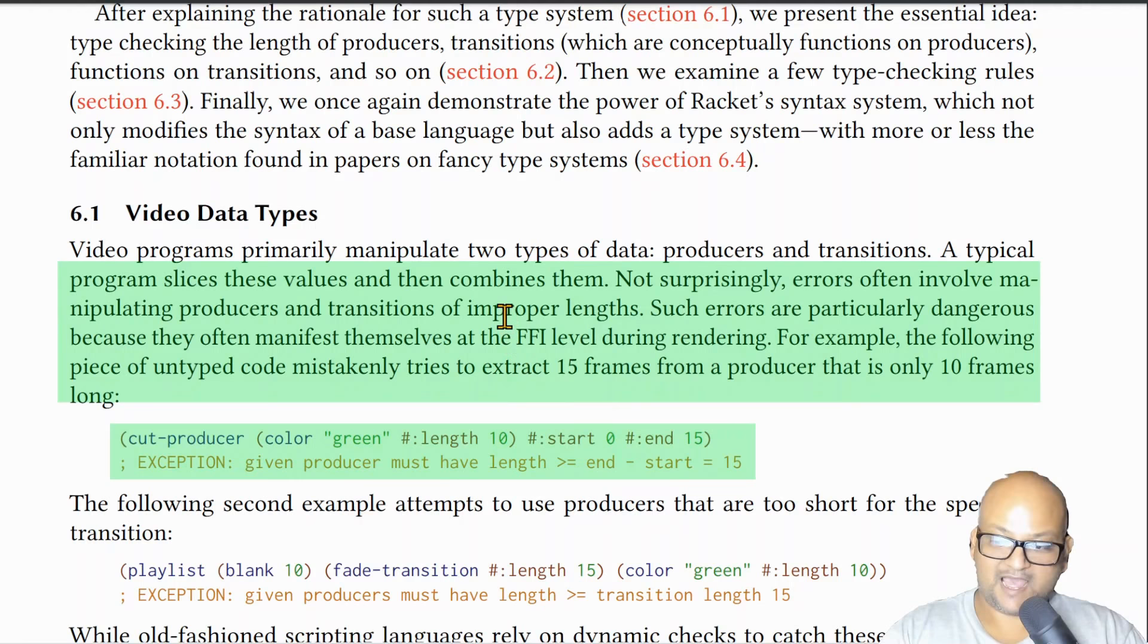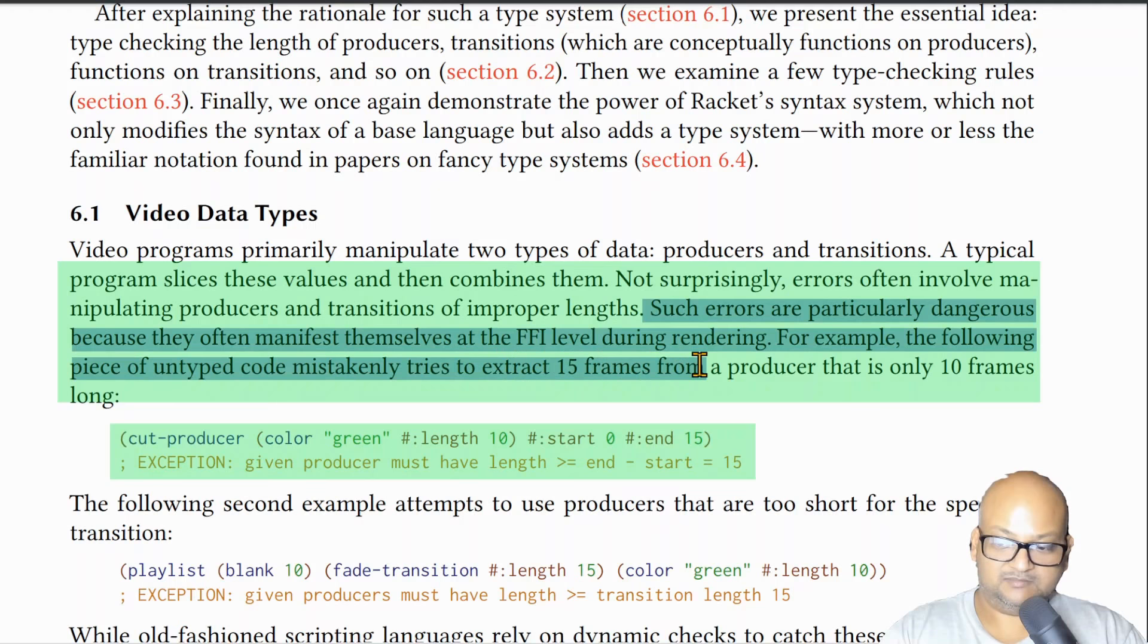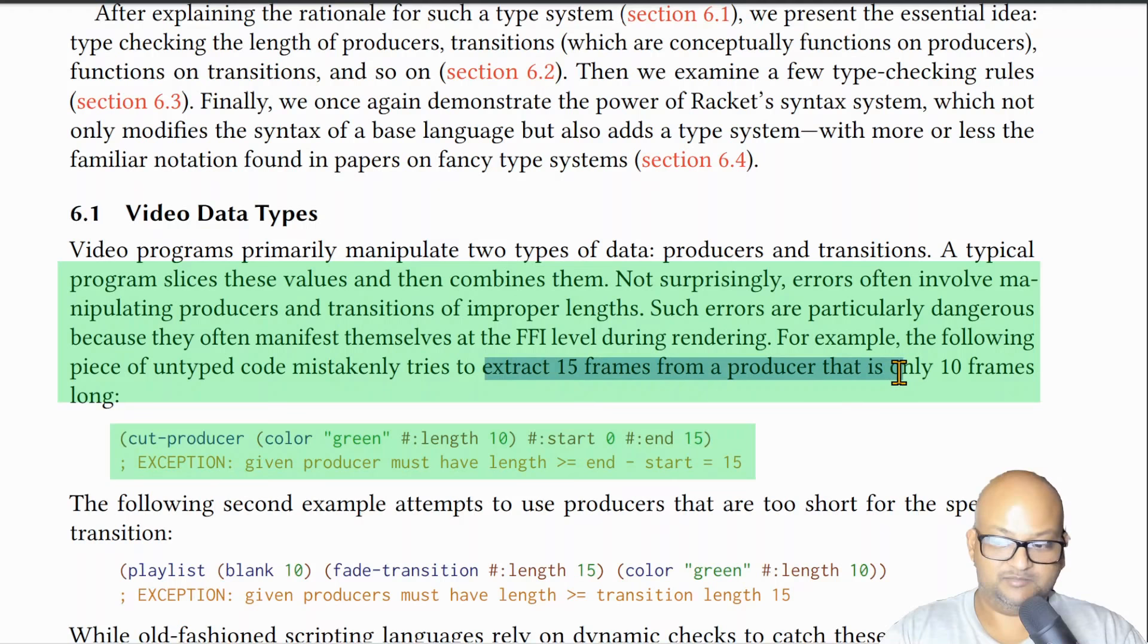For example, there's a very common class of errors where one section, for example a transition, may want to use more frames from the previous clip than the length of that clip. And you can eliminate errors like that by creating a dependently type system which uses the lengths of clips.